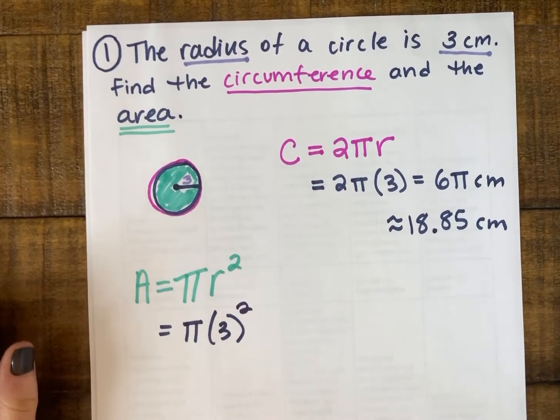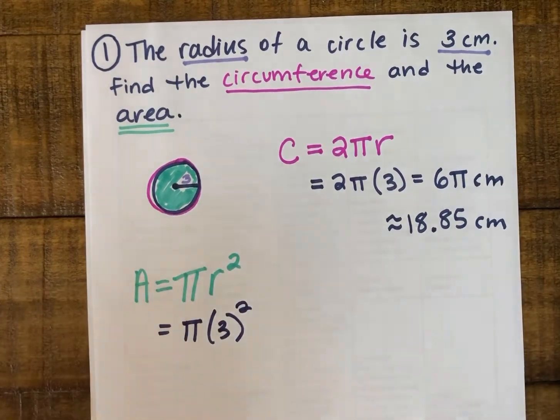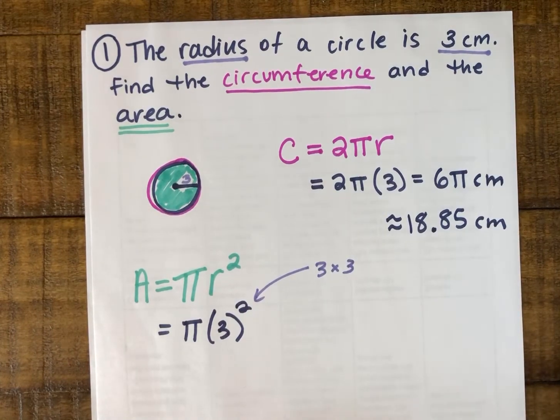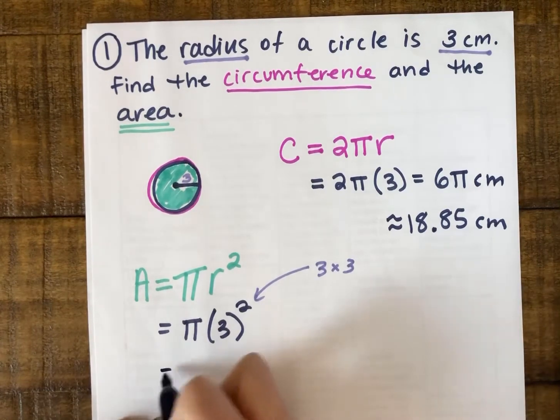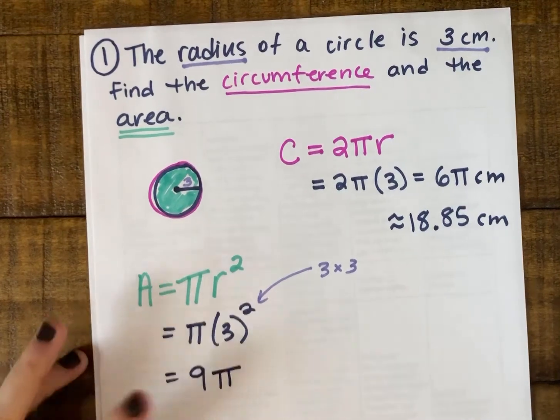So 3 squared is 3 times 3 - not 3 times 2, but 3 times itself is how you square something. And that would be 9 times π. So 9π would be my exact answer.